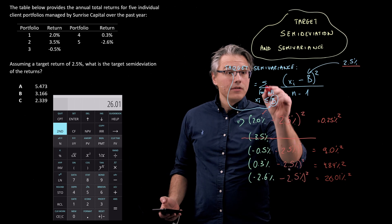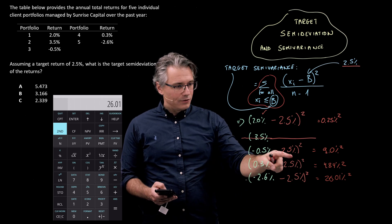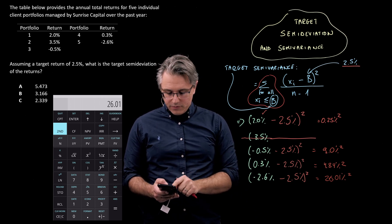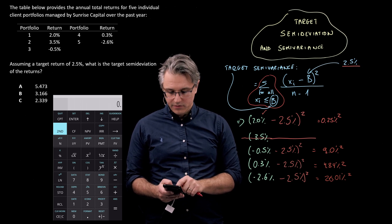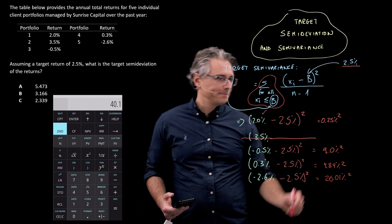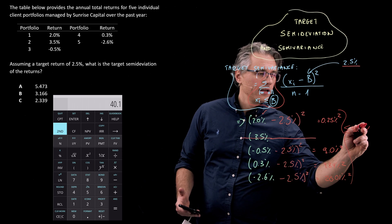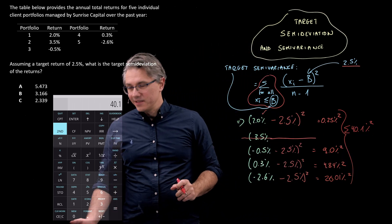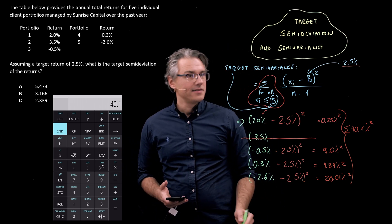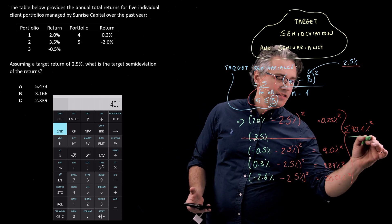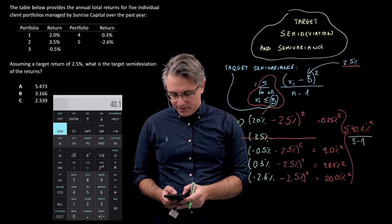We need to compute the sum of all these distances squared, so 26.01 plus 4.84 plus 9 plus 0.25. The total seems to be 40.1. Let's just recall that this is percent squared, and in order to calculate the target semi-variance, we divide by 5 minus 1, so that's 4. Divide this by 4, and I'm looking at an answer of 10.025.